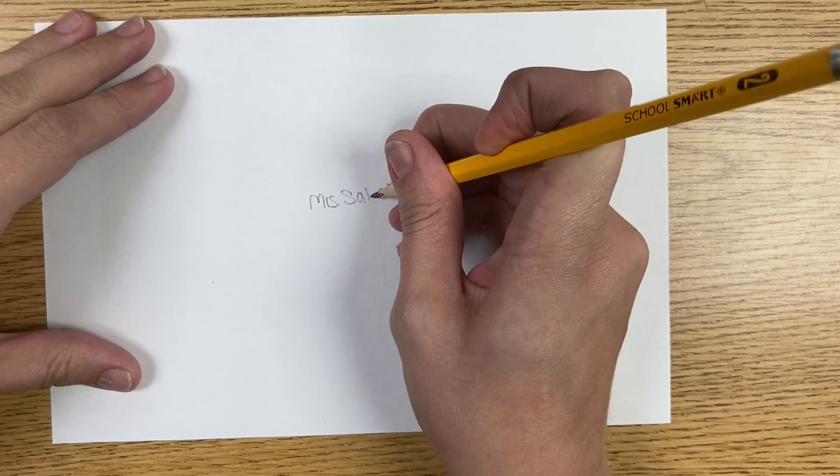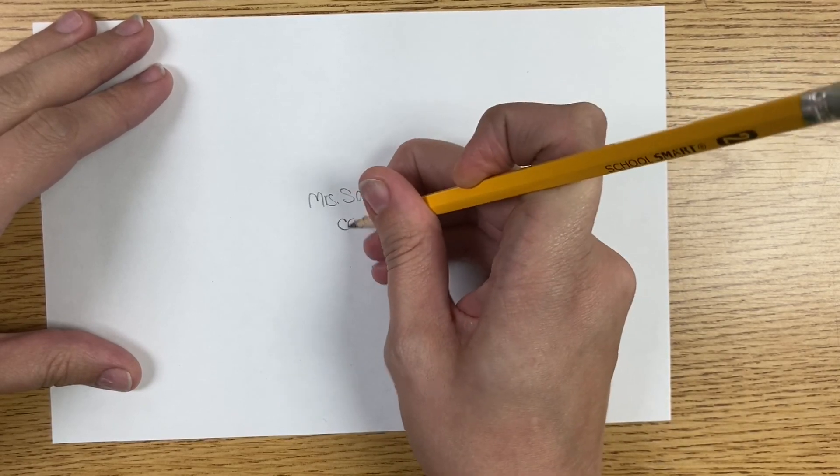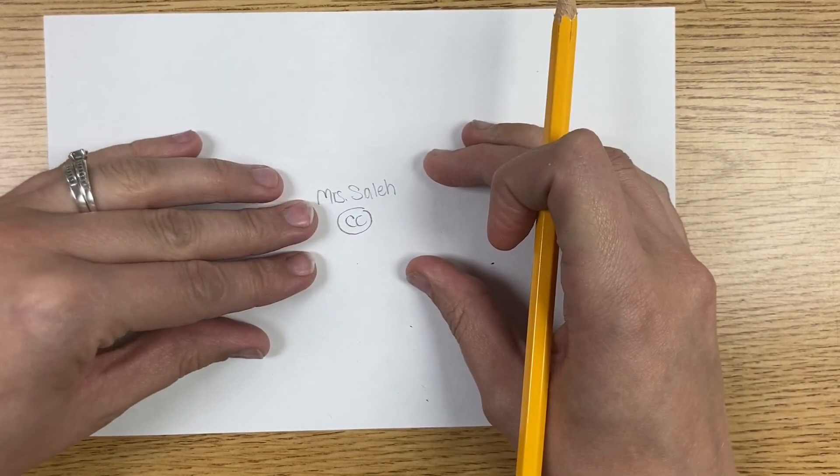So really small in the middle. I'm going to write my name, okay? And then your class code, whatever that is, with a circle around it. Make sure it's small and in the middle.